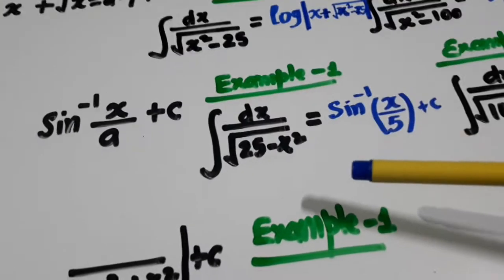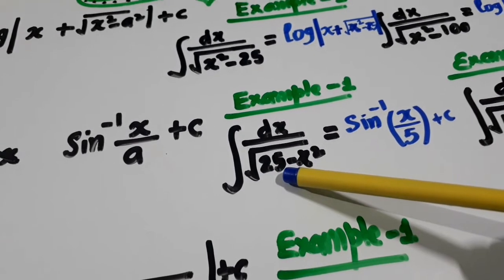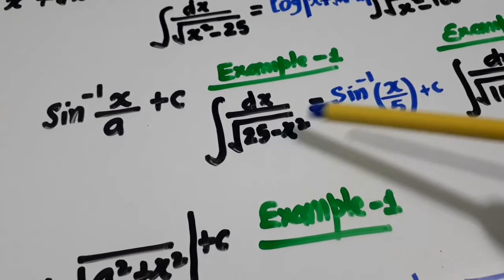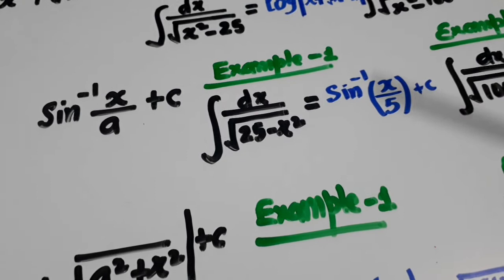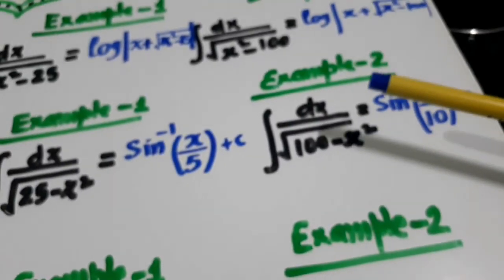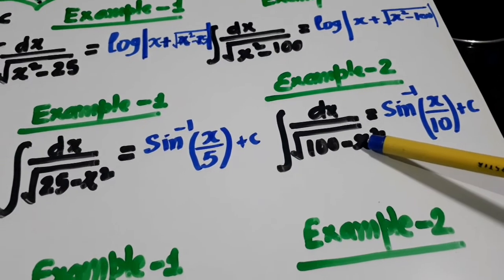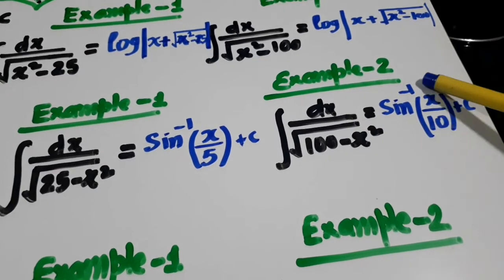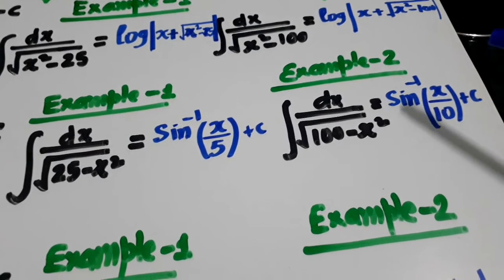Example: dx over under root 25 minus x square. Here a is 5, so the answer is sine inverse x over a, where a is 5 — that's all. Similarly, dx over under root 100 minus x square: here a is 10, so the answer is sine inverse x over 10. Very, very simple.